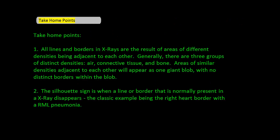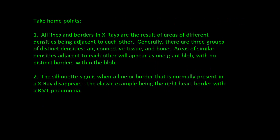And now for our take home points. Firstly, all lines and borders on X-rays are the result of different areas of different densities being adjacent to each other. Generally, there are three groups of different densities: air, connective tissue, and bone. Areas of similar densities adjacent to each other will appear as one giant blob with no distinct borders. Second, the silhouette sign is when a line or border that is normally present on an X-ray disappears — the classic example being the right heart border with right middle lobe pneumonia.